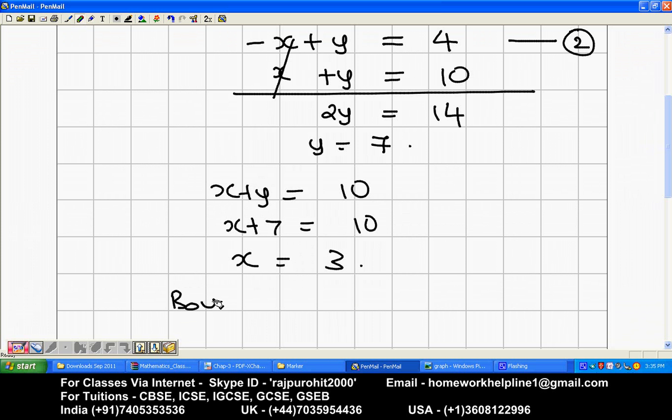So number of boys is 3, number of girls is 7. You can see 7 plus 3 is 10, total number of students is 10, and there are 4 more girls than boys.